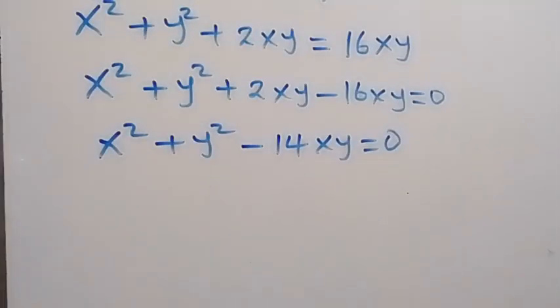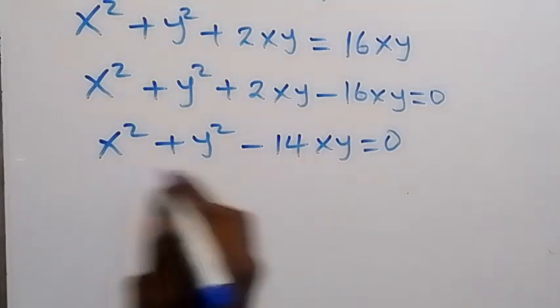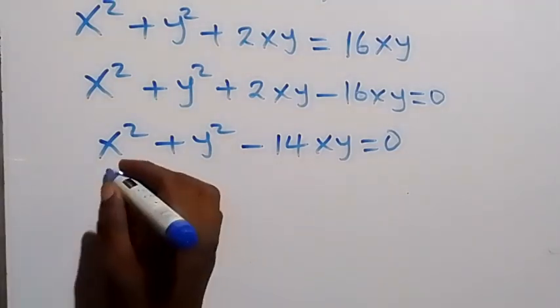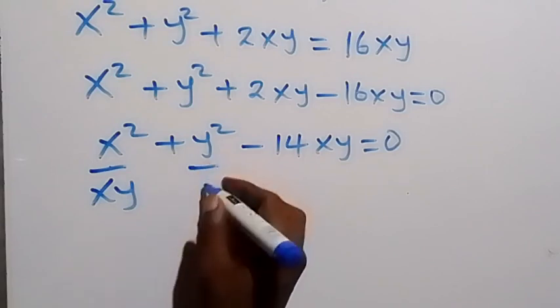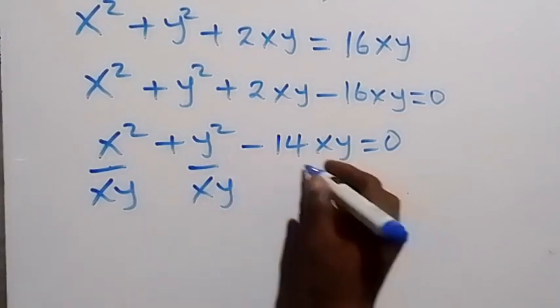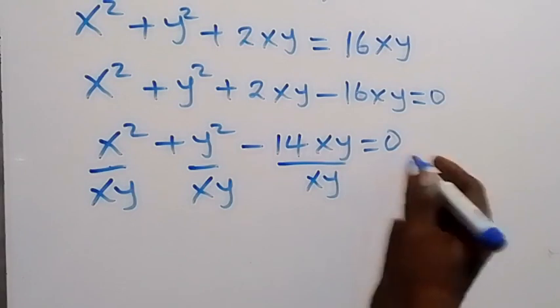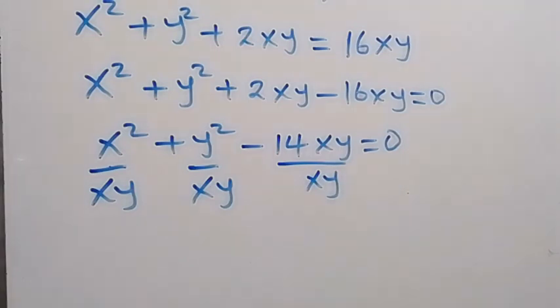Then in the next step, let's divide every side by xy. So divide this side by xy, divide this side by xy, also divide this by xy. Divide 0 by xy, it will still be 0.